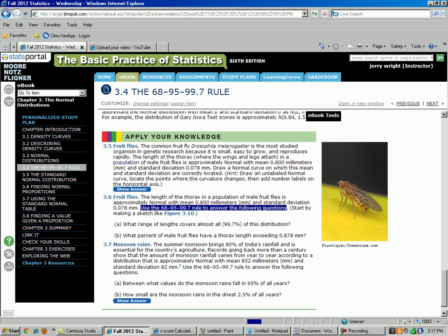Part A, what range of lengths covers almost all, 99.7% of the distribution? So we know we have to go up and down through standard deviations to answer that question. We'll do that in just a minute. And then part B, what percent of male fruit flies have a thorax length exceeding 0.878 millimeters?